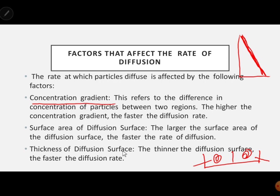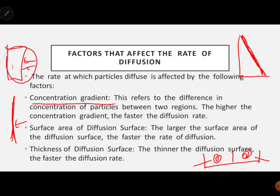The third factor is the thickness of the diffusion surface. The thinner the diffusion surface, the faster the rate of diffusion. For instance, if you have something thick and something thin with particles trying to enter, the particles will move faster through the thin surface because the walls are small, making diffusion higher compared to a thick surface.